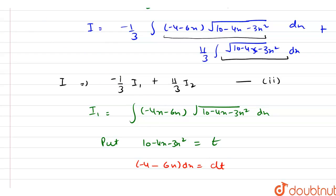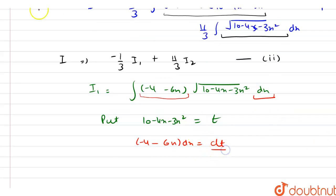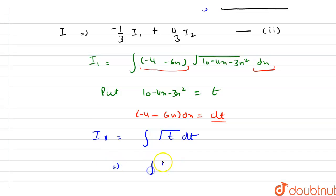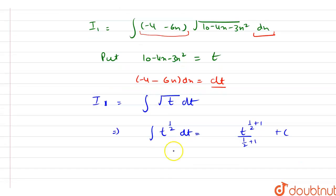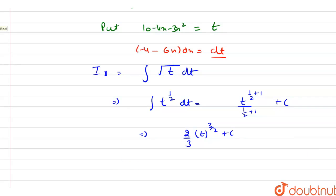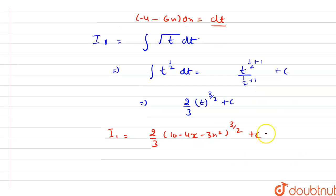We can see that (minus 4 minus 6x) dx already exists in our question, so we replace it with dt. So I1 equals integration of under root of t dt, which equals t raised to power 1 by 2 dt, equals t raised to power 3 by 2 divided by 3 by 2 plus C, giving us 2 by 3 into t raised to power 3 by 2 plus C. Substituting back, I1 equals 2 by 3 into (10 minus 4x minus 3x squared) raised to power 3 by 2 plus C. This is point number 3.